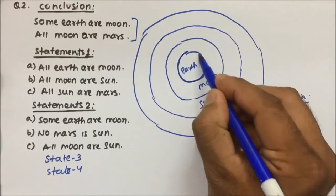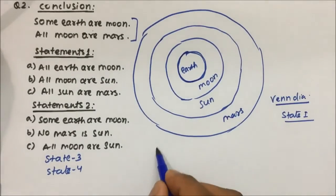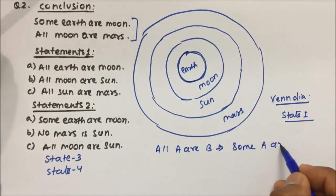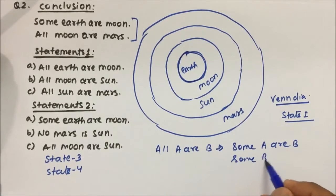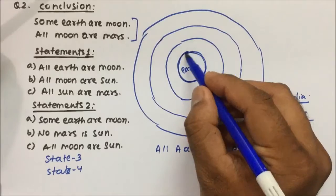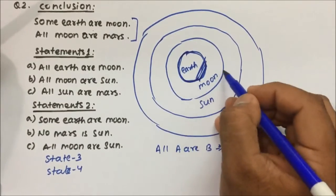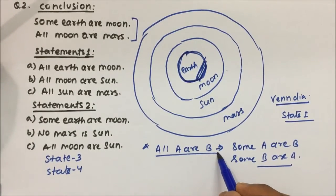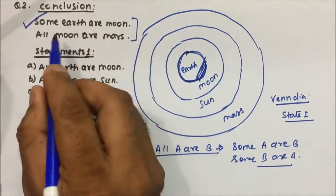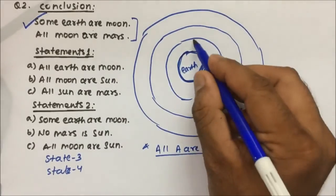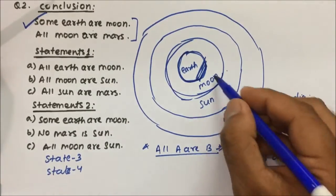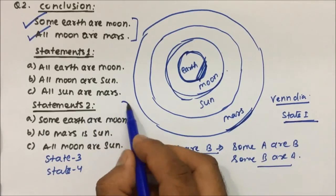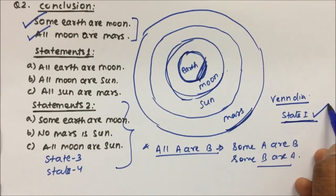Let's see if from statement 1 both conclusions are true. Conclusion 1: some earth are moon. You see earth is here and moon is here. When all earth are moon — when all A are B — then we can very well say some A are B or some B are A. When all of earth is inside moon, then definitely some part of earth will also be moon. So conclusion 1 is true. Conclusion 2: all moon are Mars — you see all those moons are inside Mars. So conclusion 2 is also correct. From statement 1 itself we can say both conclusions are true, so no need to check statement 2. Statement 1 will be our correct answer.